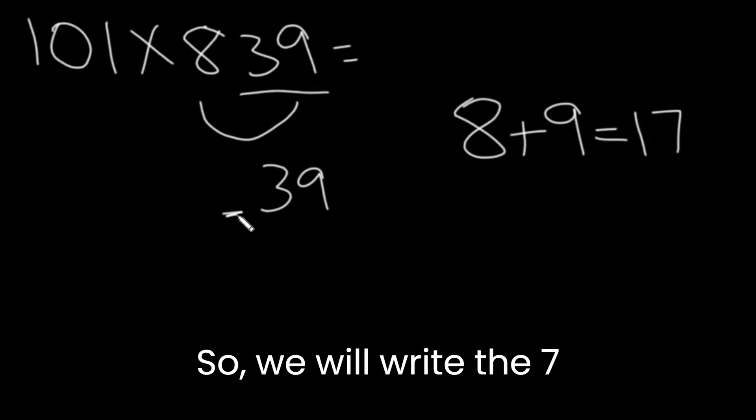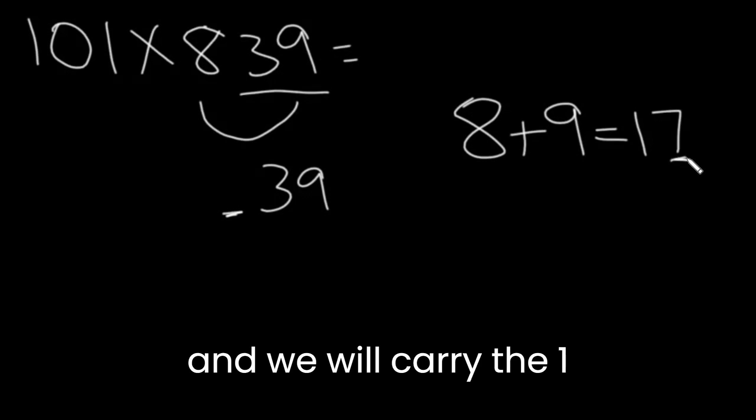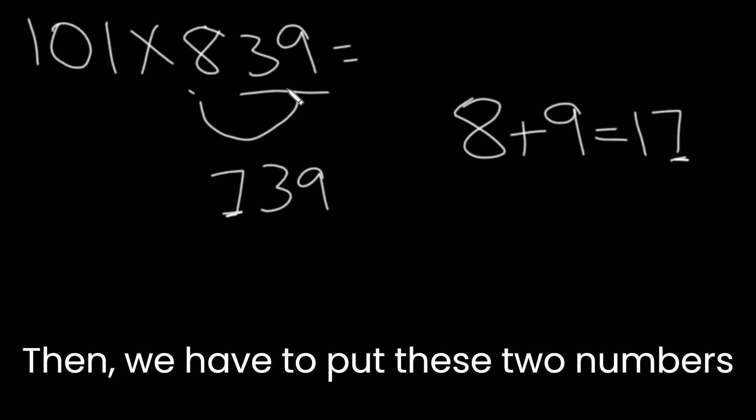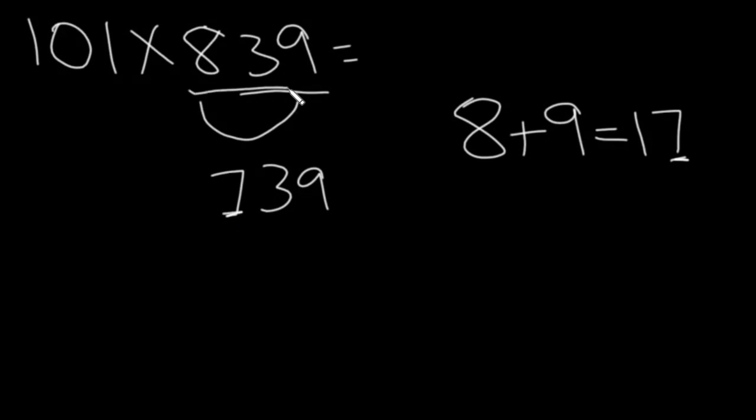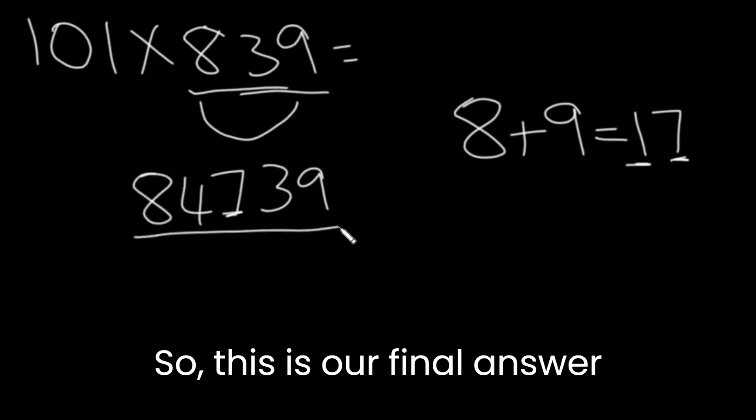But only one number can go here, so we'll write the 7 and we'll carry the 1. So let's write 7. Then we have to put these two numbers. 83 plus the carried one will give us 84. So this is our final answer.